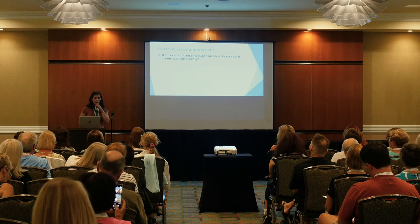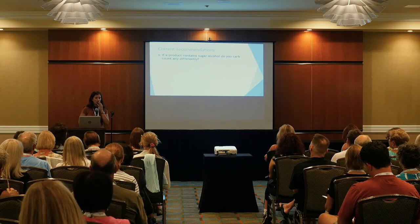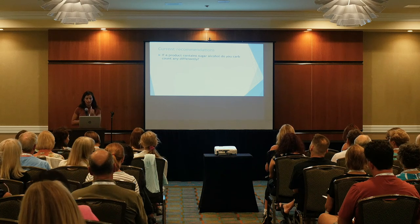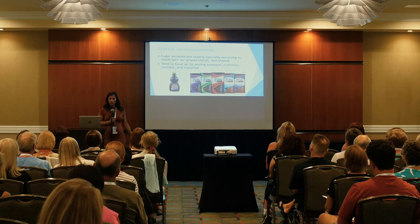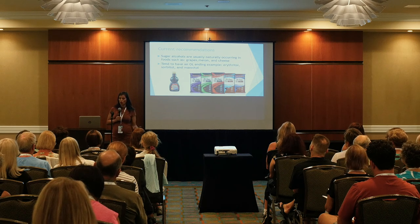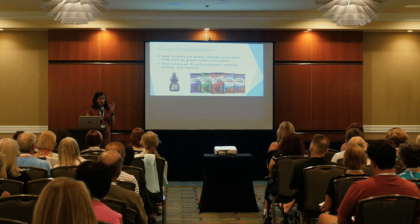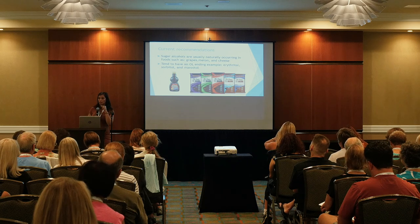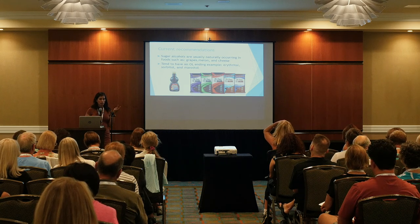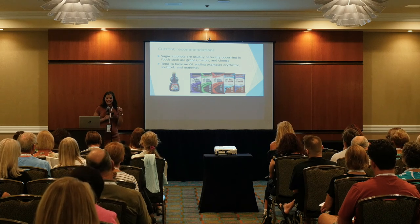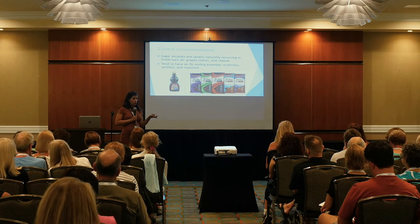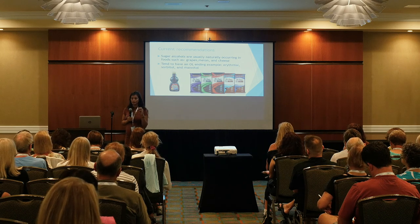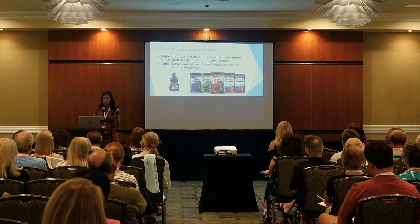What if a product has sugar alcohol — do you carb count differently? Sugar alcohols are naturally occurring, found in foods like grapes, melon, and cheese. On the label you'll see them written with an -ol ending: erythritol, sorbitol, mannitol. They tend to be in sugar-free chocolates, sugar-free syrup, Atkins bars, and ice cream. Some people get a little GI discomfort — basically diarrhea — but not everybody.